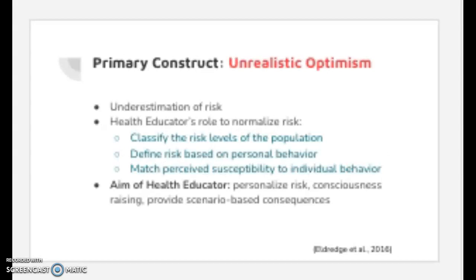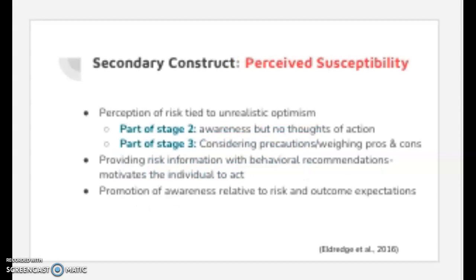The primary construct of the Precaution Adoption Process Model is unrealistic optimism. This is an underestimation of risk due to underestimation of strategies others use to protect themselves and stereotyping others as perceived at higher risk. Health educators can normalize risk by comparing standards to an obsolete and normative standard for the risk of others. Unrealistic optimism is addressed through personalizing risk, consciousness raising, specifying consequences of the risk, using probability descriptions, and scenario-based risk information to decrease underestimation of risk.